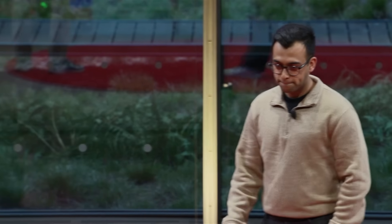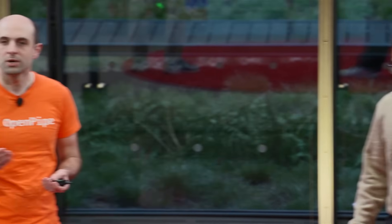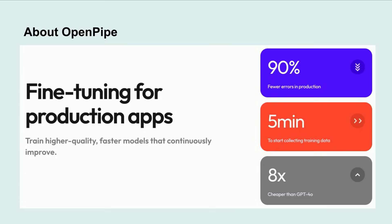At OpenPipe, what we do is we help you build, train, and deploy open source models for actual usage. We also let you use, in production, the signals you get from users and from the environment to improve your model continuously over time, and that's some of what we'll be talking about with what we did with Method.